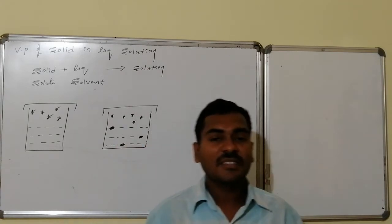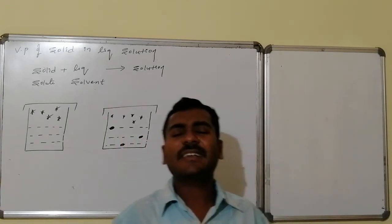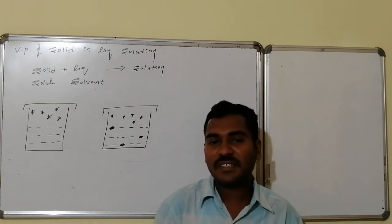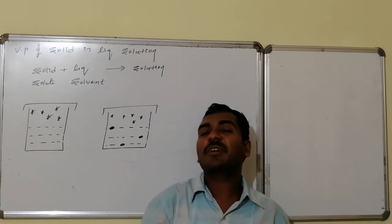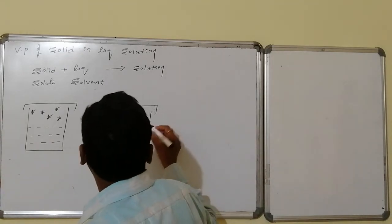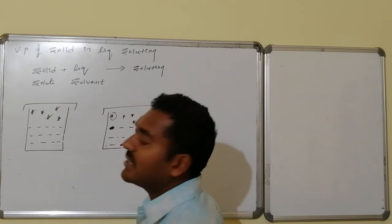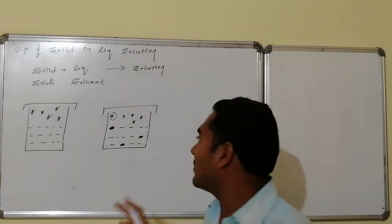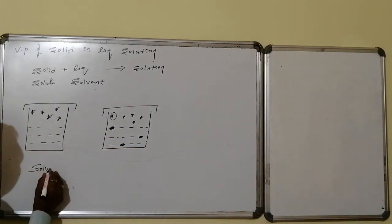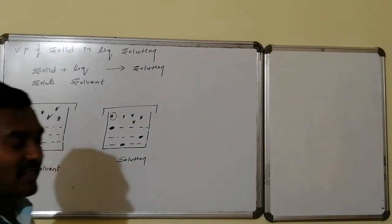The solute molecule is in a solid physical state. Converting it to a liquid or vapor state requires a lot of energy. Since it maintains a solid physical state and vaporization requires more energy, vaporization is not possible for that solute molecule. So only four out of five molecules enter the vapor state in the solution, compared to five out of five for the pure solvent.